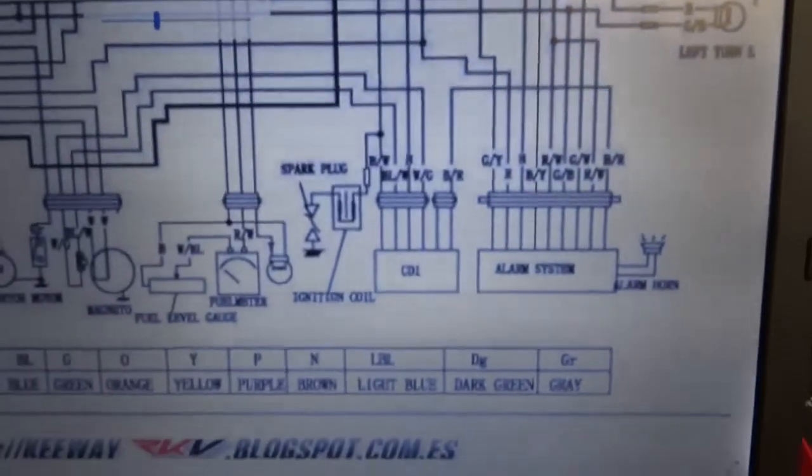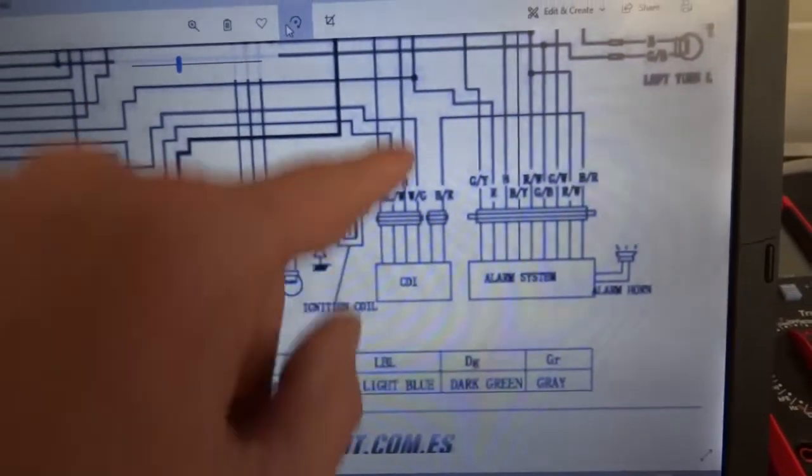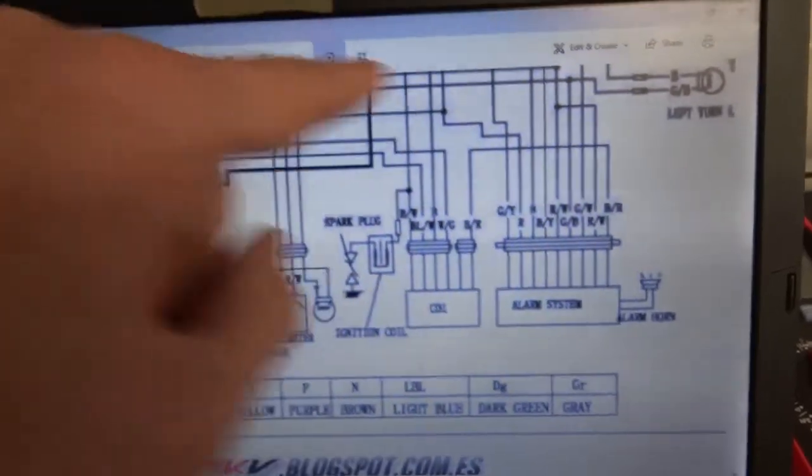So that's one ground, we've got a second ground here, so we know we've got two grounds. The output to the coil and to the rev counter.